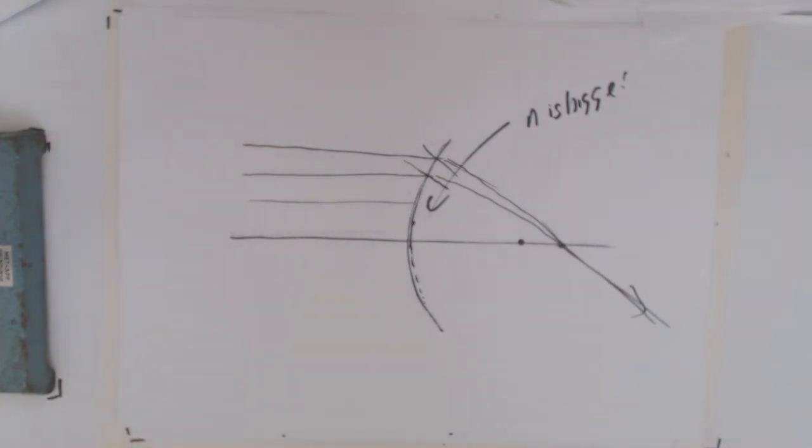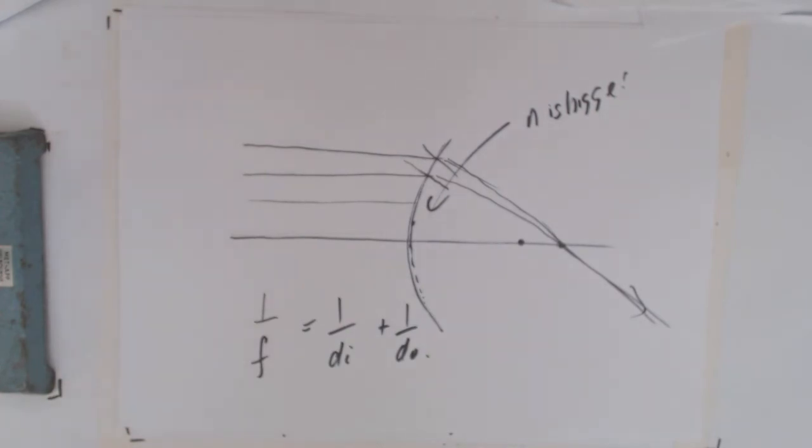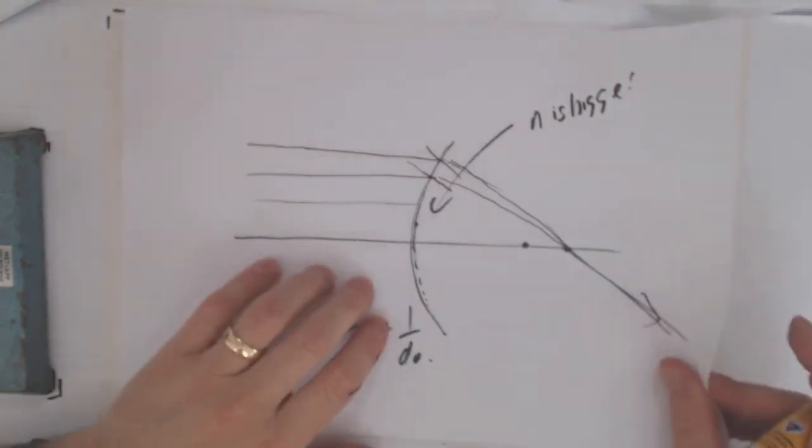This is where we can look at our little equations and go, okay, what will it do to the image size if we've got our object at the same location? We've got 1/f equals 1/di plus 1/d₀. So if we make a smaller focal length - that's the equation we'd use to solve this, but let's just do it diagrammatically.